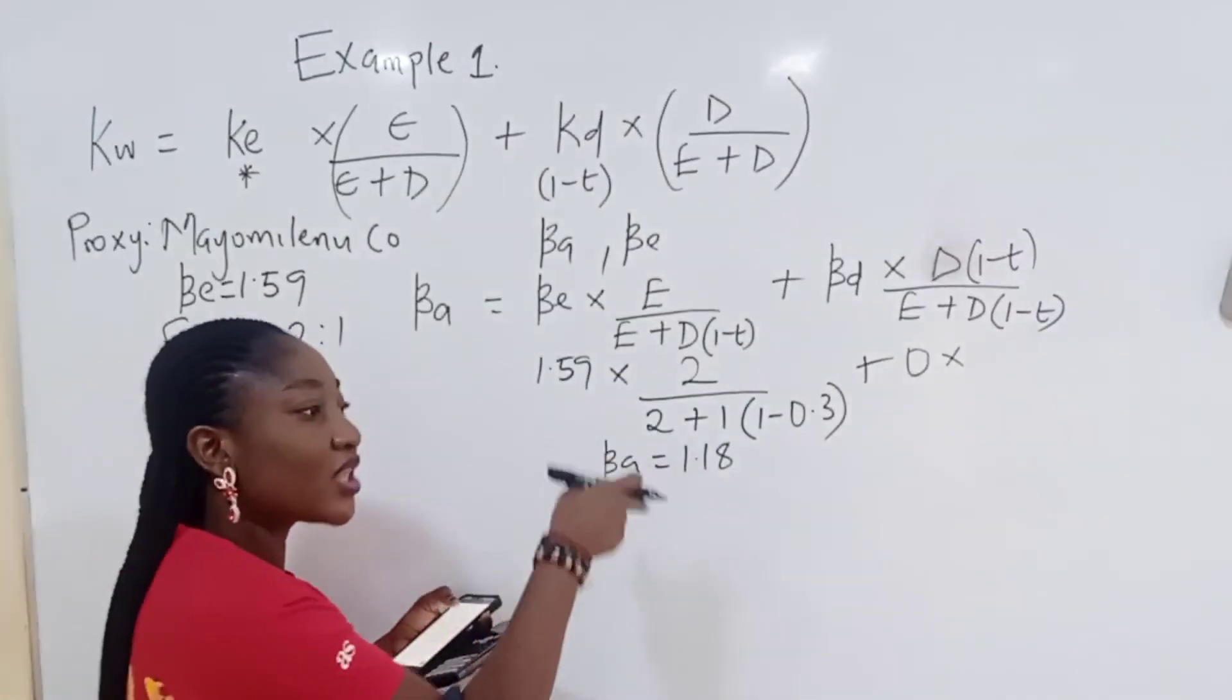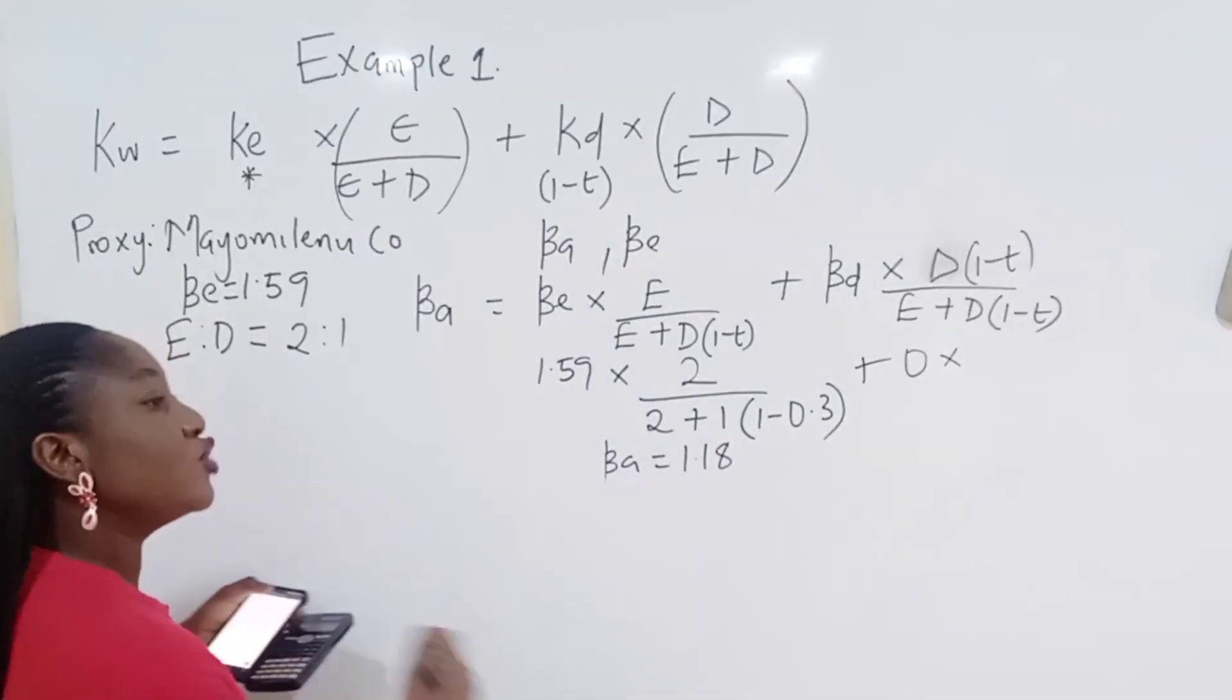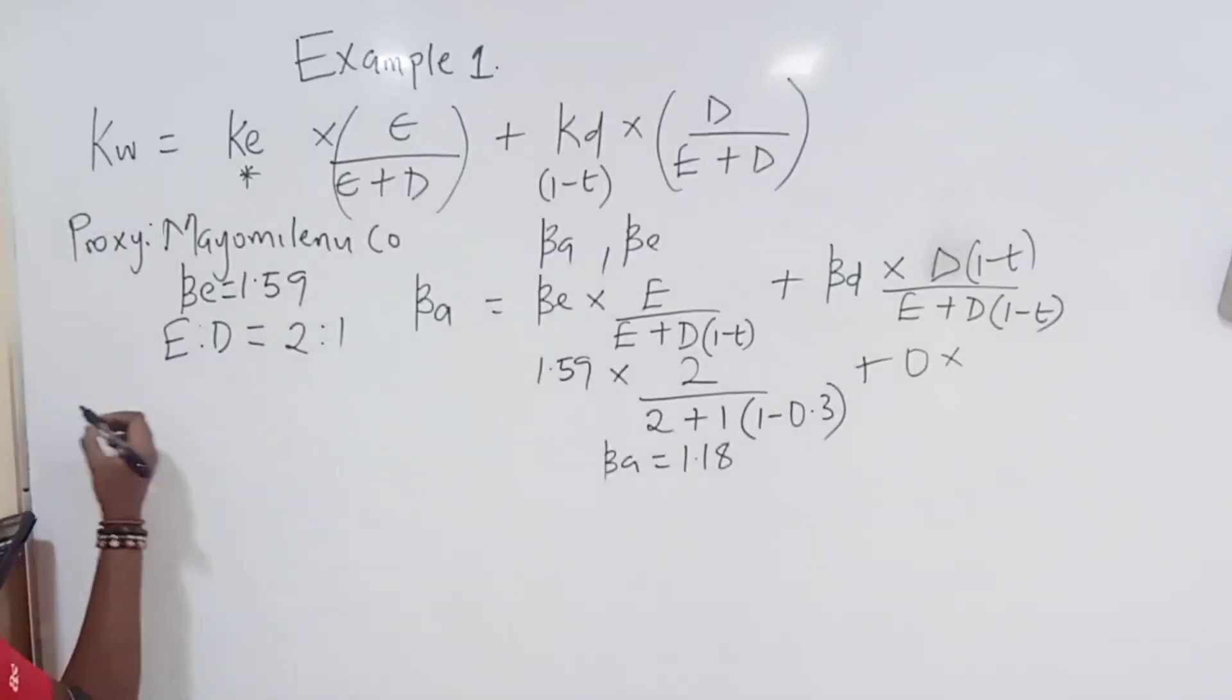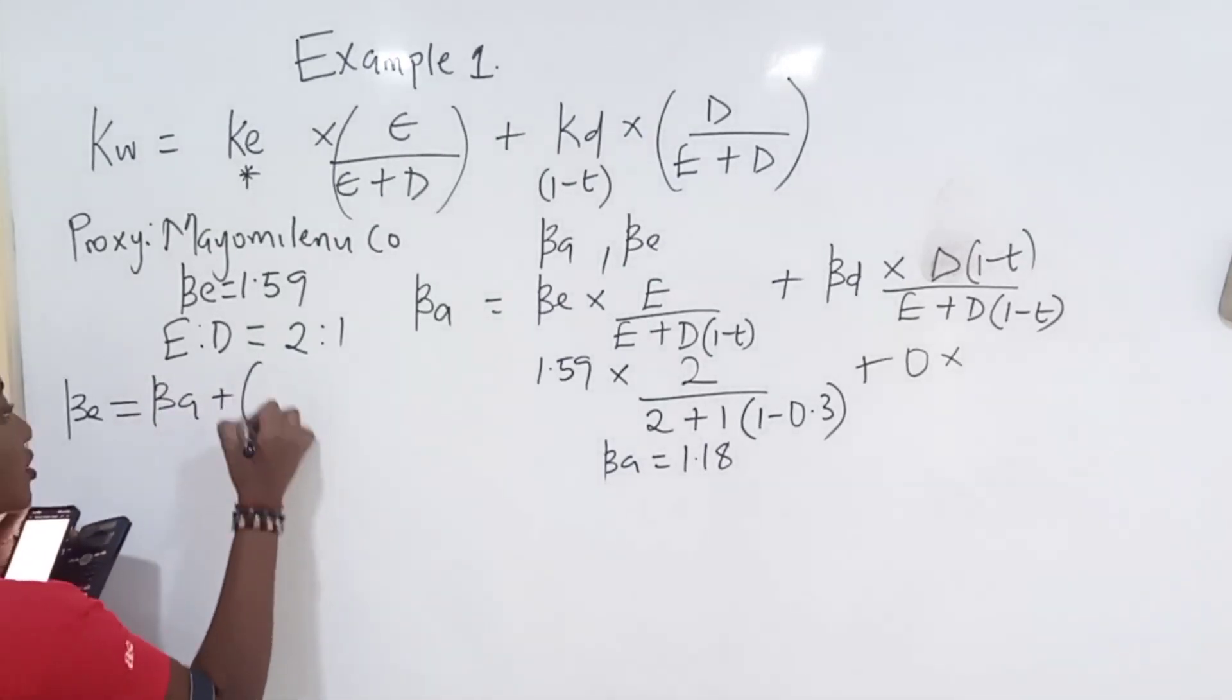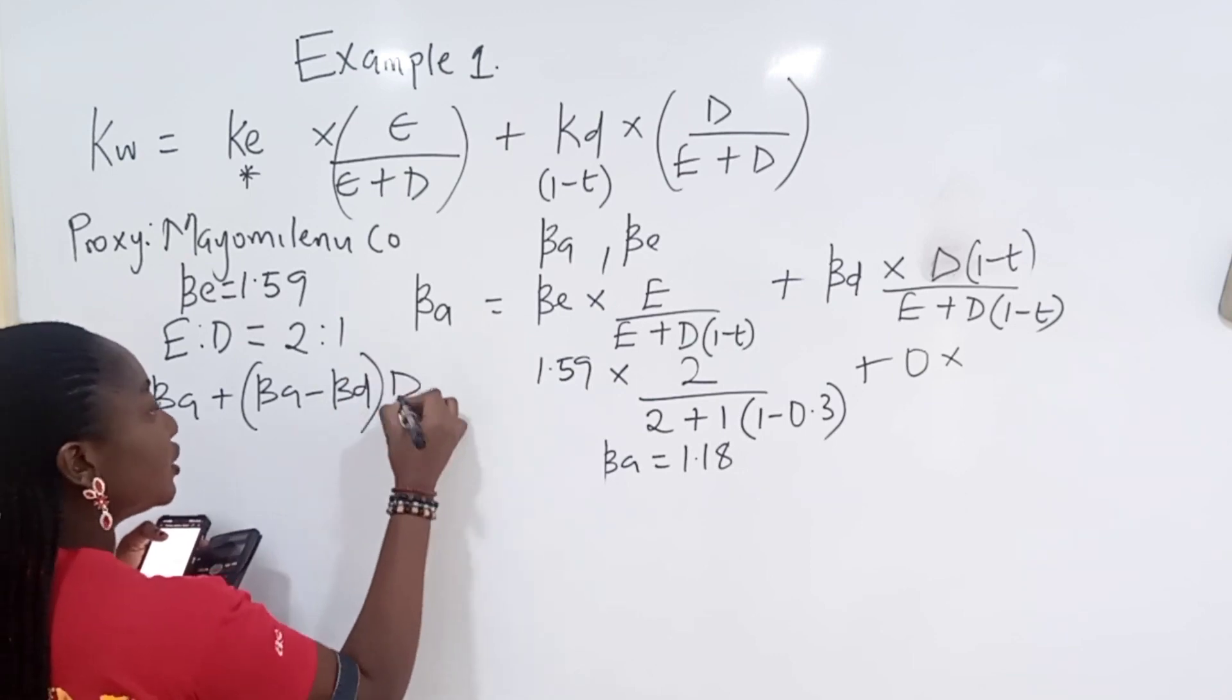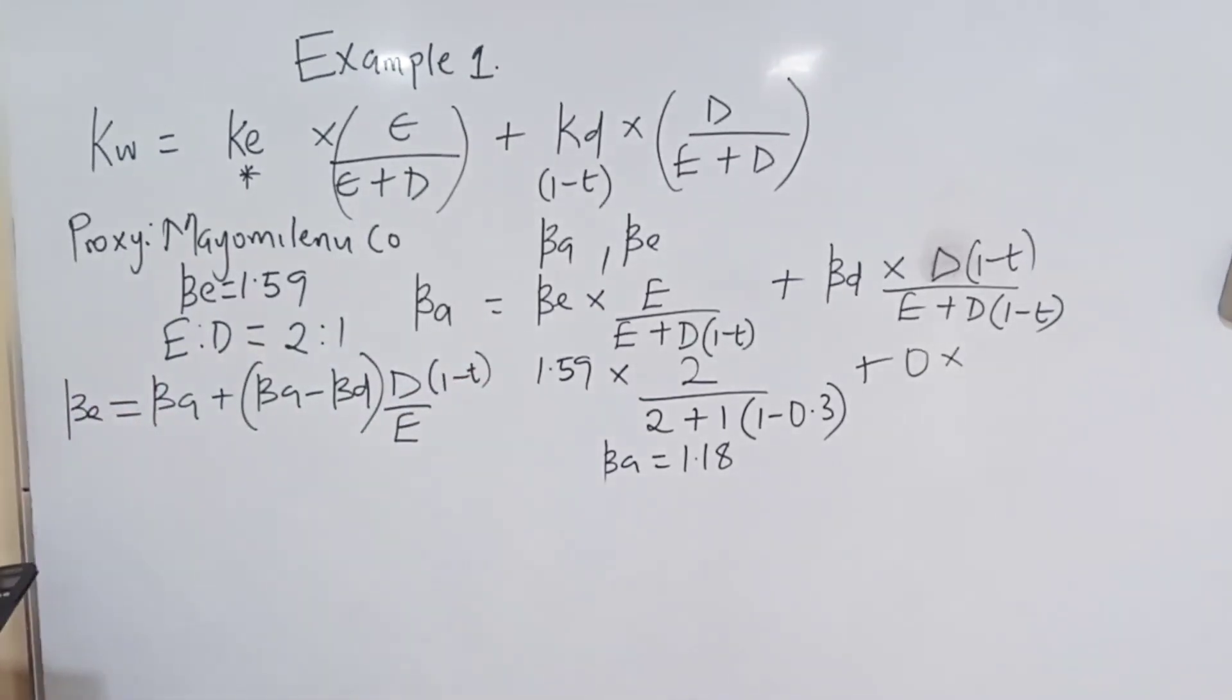This is the risk of the waterbed business. And I will take this to my company. So what is the first step? You will regear. So you can see that it makes sense. Then you will regear. What's the formula to regear? When you are trying to regear, you are trying to get to BE. So BE equals to what? BA plus BA minus BD, D over E post tax. Now it's very simple. When you use it many times, you just get used to it.